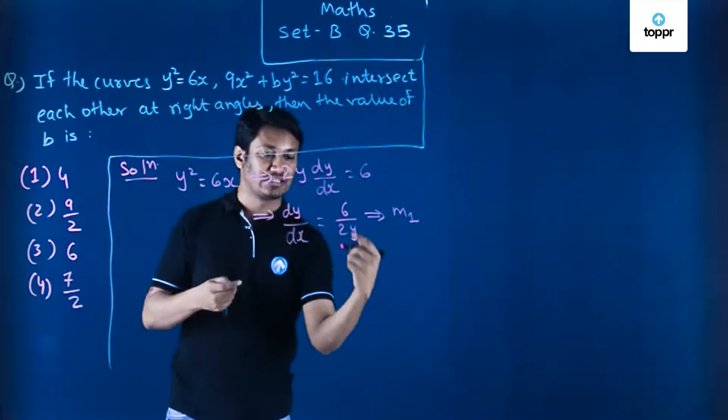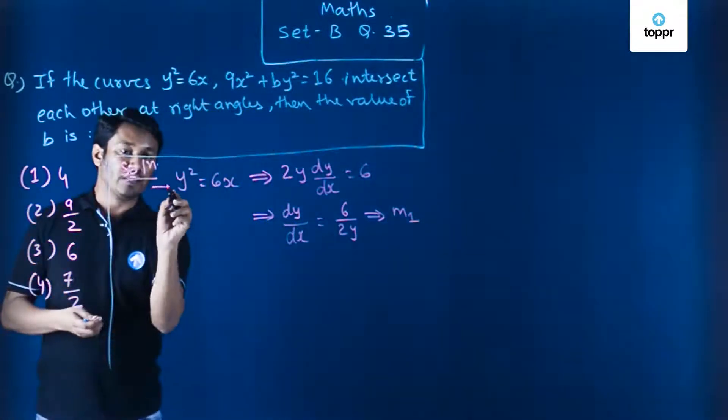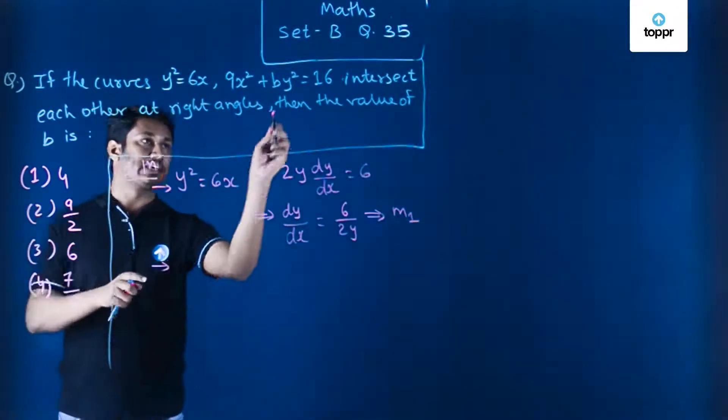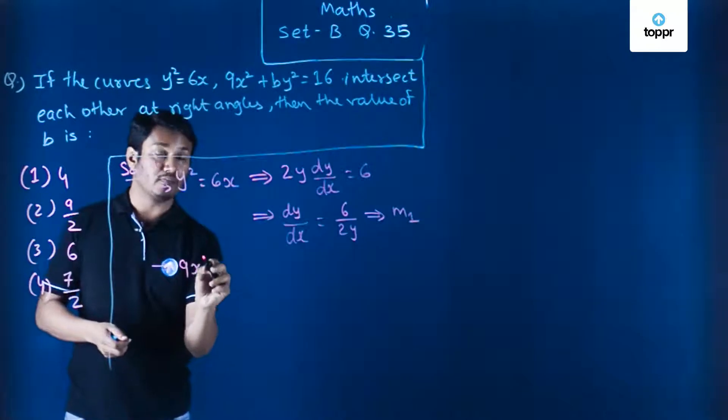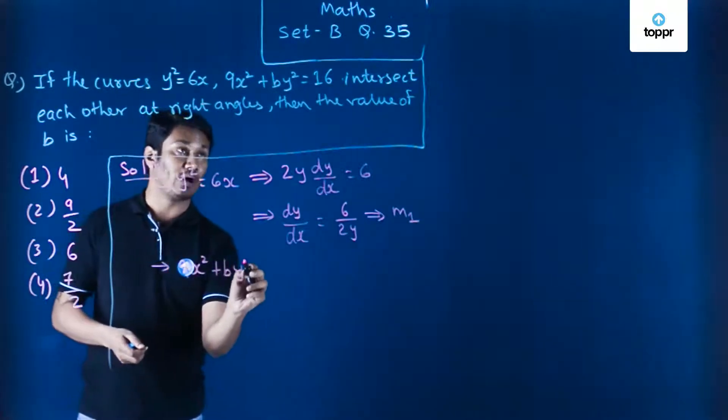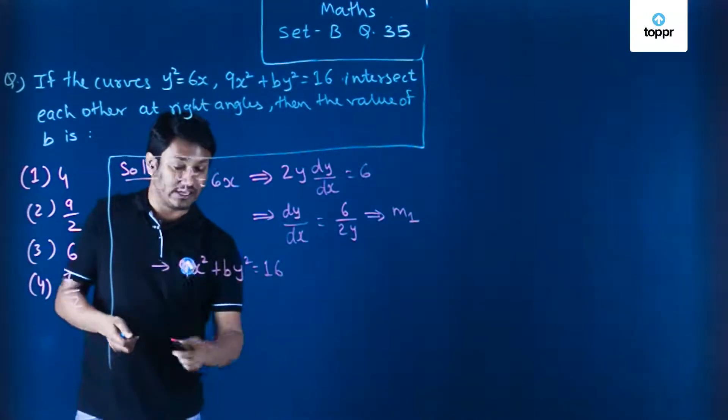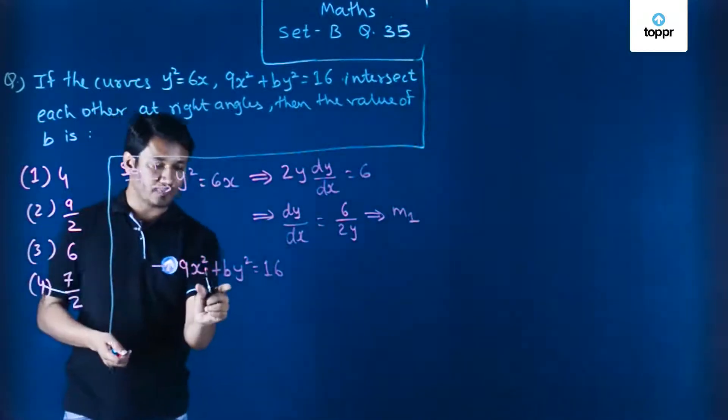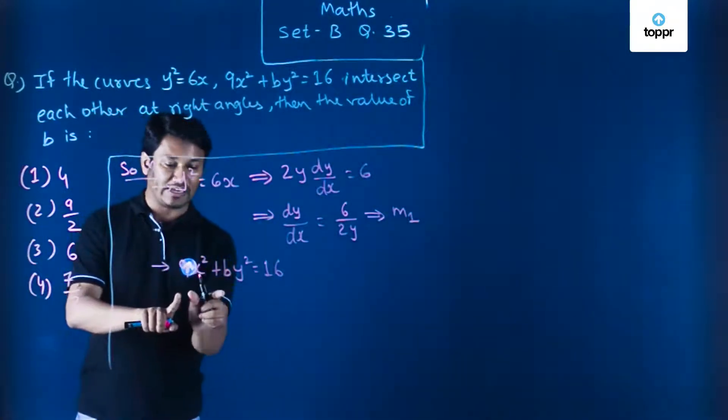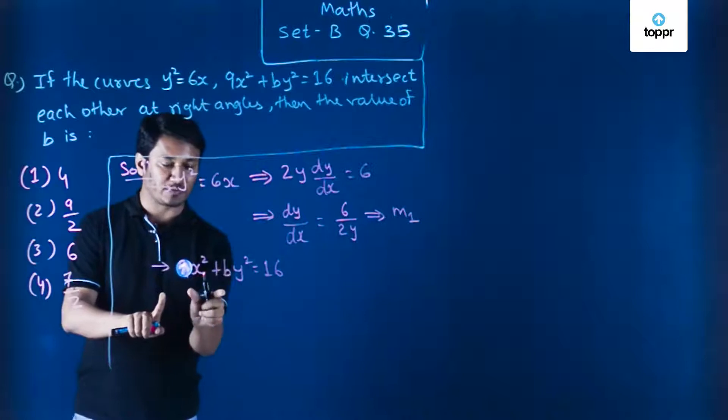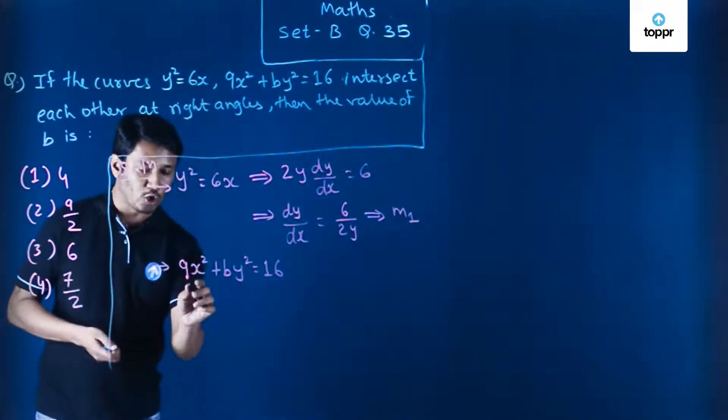Let's say my first tangent is drawn to curve y² = 6x, and hence the slope of the first tangent will be m₁, which is 6/2y. Now I will consider the second curve. The second curve is 9x² + by² = 16. Let us find out the value of dy/dx again. So we'll differentiate this whole expression with respect to x.